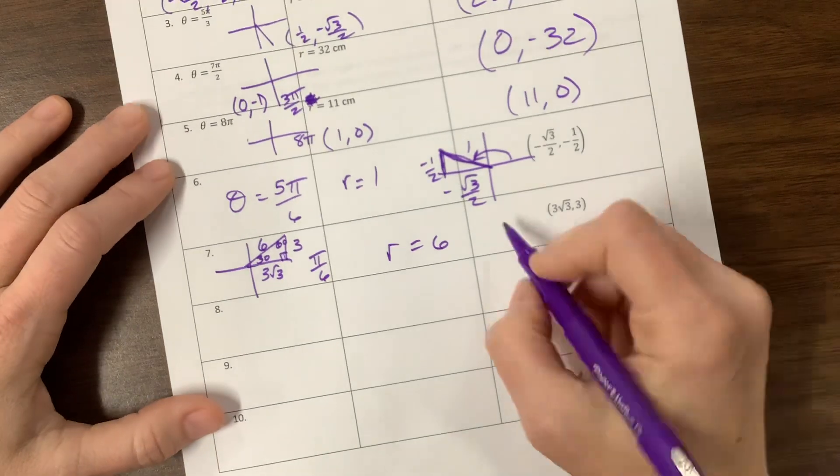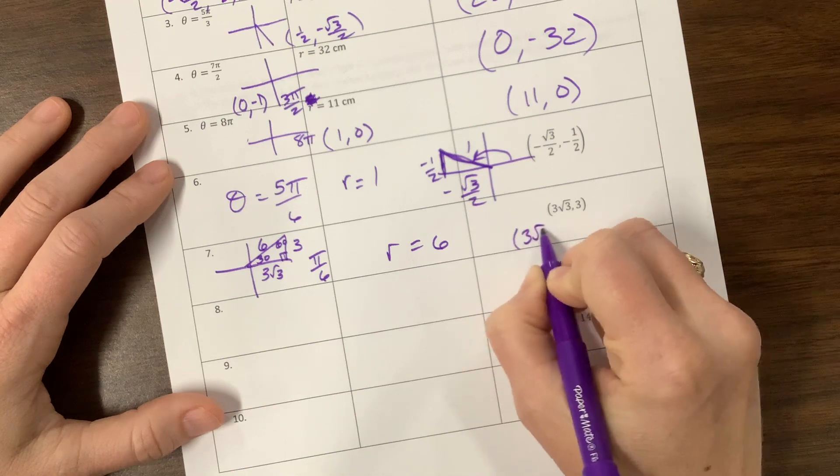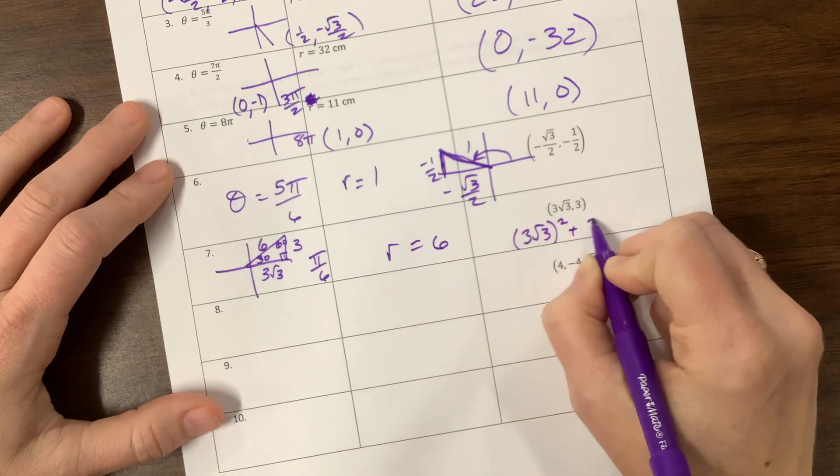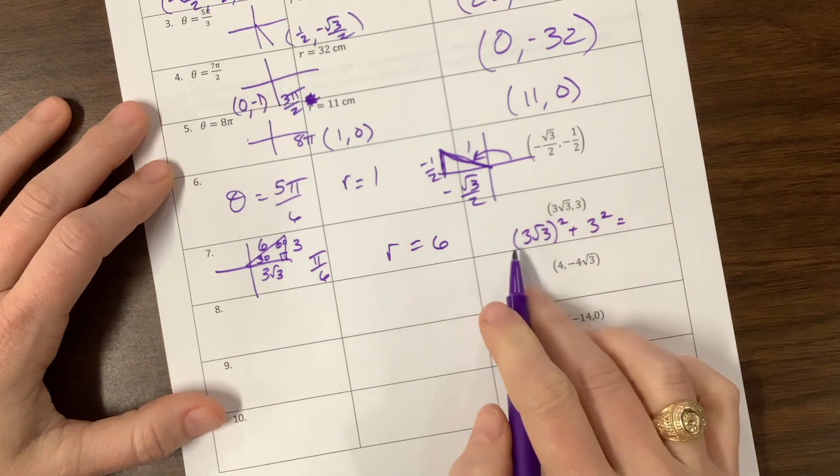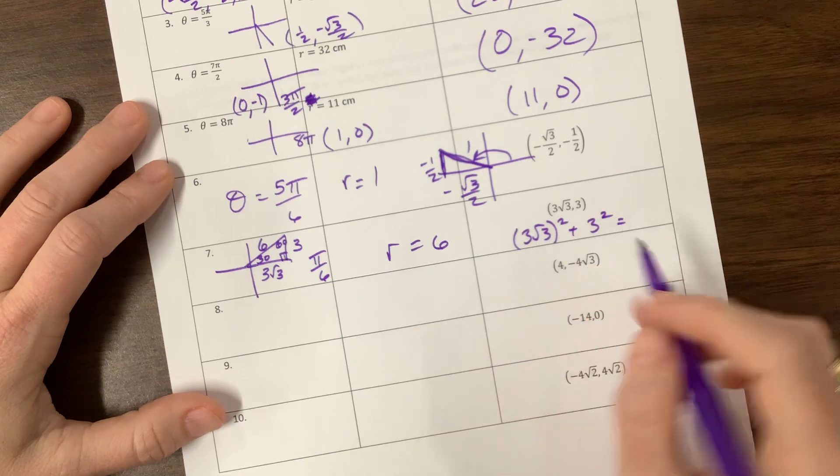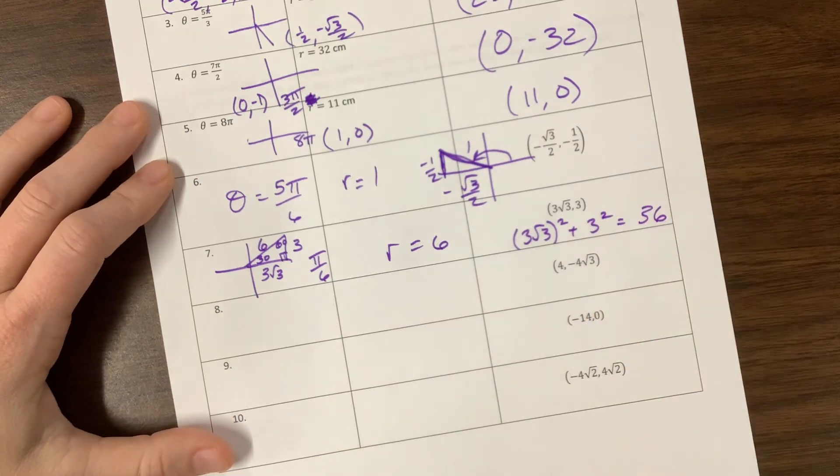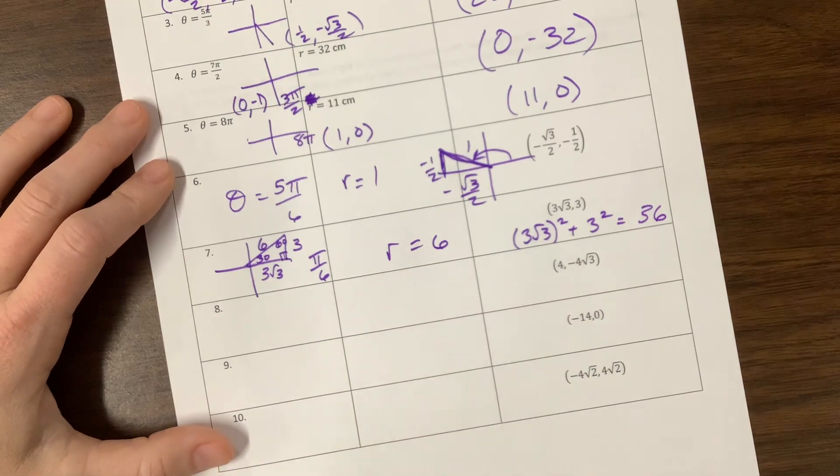All right. 3√3 squared plus 3 squared would be equal to—this is 9 times 3 is 27 plus 9. 27 plus 9 is 36. Square root of 36 is 6. Happy?